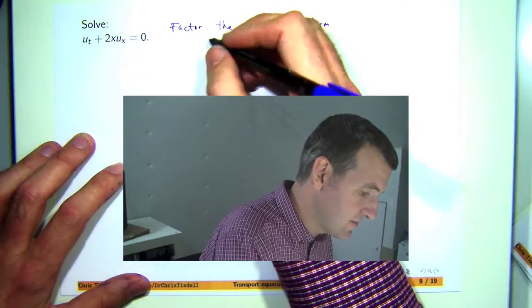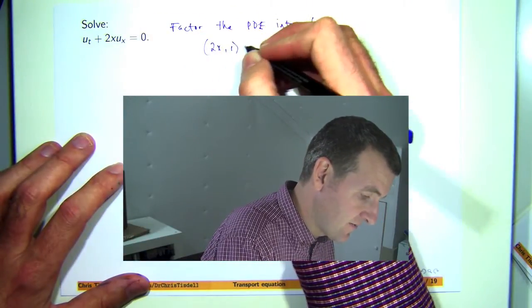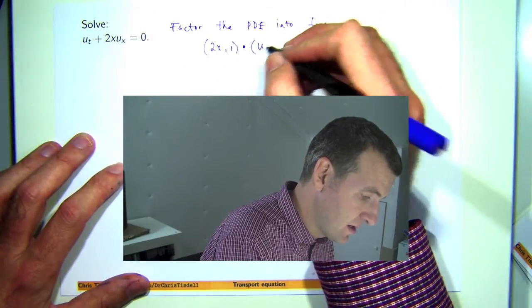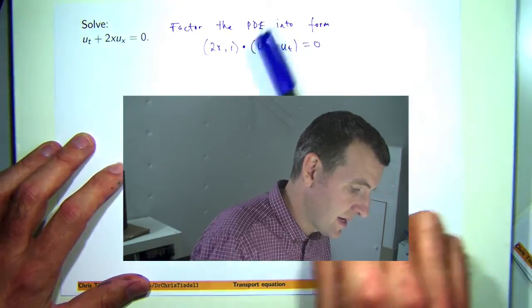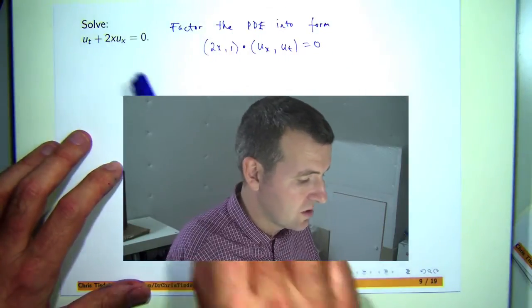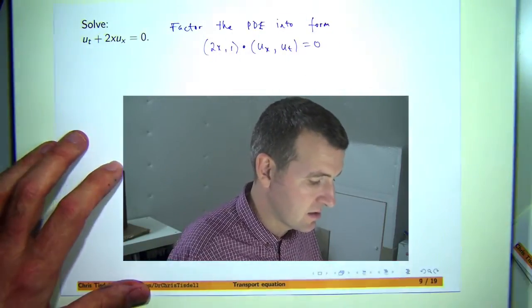Okay, so the left-hand side can be factored into the following form. Okay, where this is a dot product, so if you expand this out, you'll see that you get this PDE.